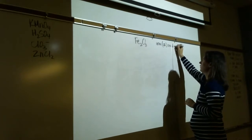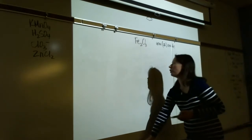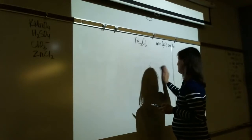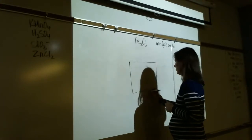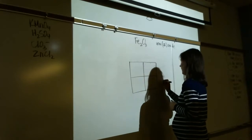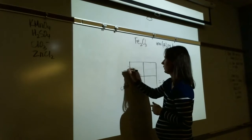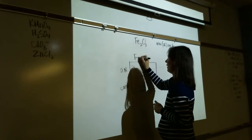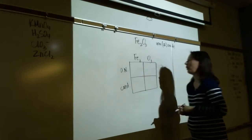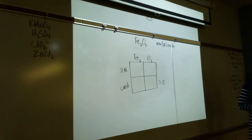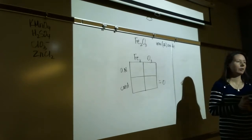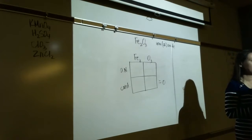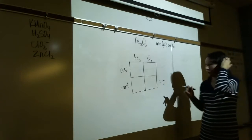SO3 — neutral, contributions add up to zero. No rules for sulfur (group 6). Oxygen is -2, three oxygens contribute -6. So sulfur must be +6. The top row gives your final answers: S=+6, O=-2. The bottom row is just bookkeeping.